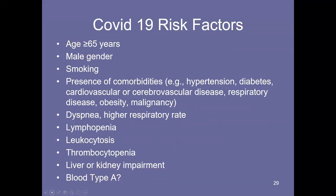Some of the risk factors: age, male gender, Latino ethnicity — the worst combination was being a male smoker, obese, and Latino. Presence of comorbidities including hypertension, diabetes, cardiovascular disease, and malignancies being treated. Manifestations included dyspnea, lymphopenia, leukocytosis, and thrombocytopenia — patients developing clotting disorders with dropping platelet counts. Blood type A has been postulated as a risk factor but not confirmed, and how robust that correlation is is still being examined.